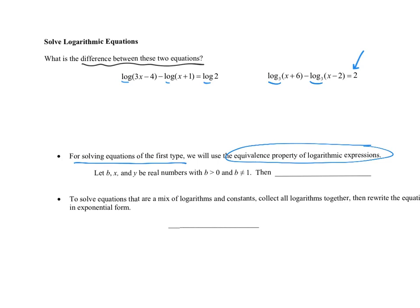When solving equations of the first type, we're going to use an equivalence property of logarithmic expressions — similar to what we saw with exponential expressions. If you have log base b of x equal to log base b of y, then x must equal y. So if you can write a single log on one side equal to a single log on the other, you know their arguments x and y have to be equal.